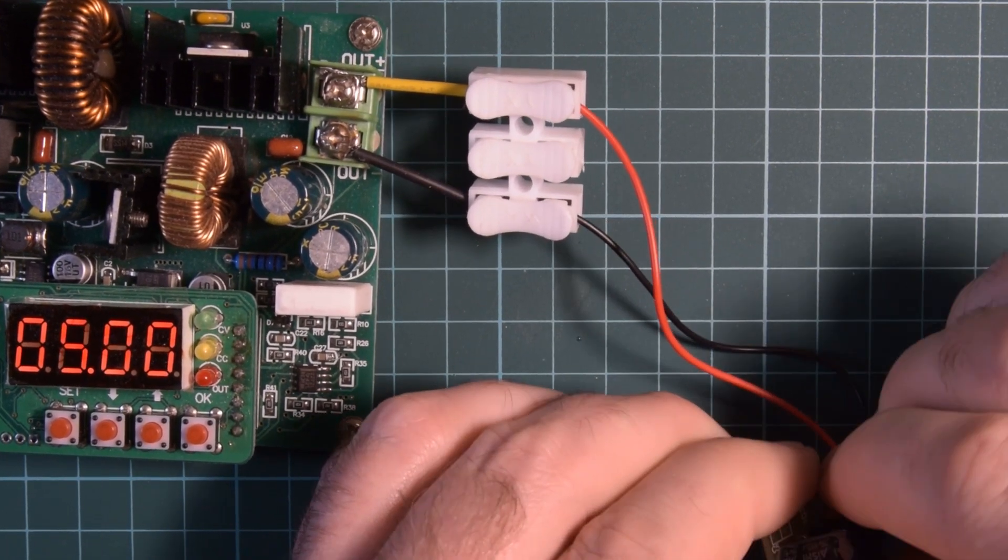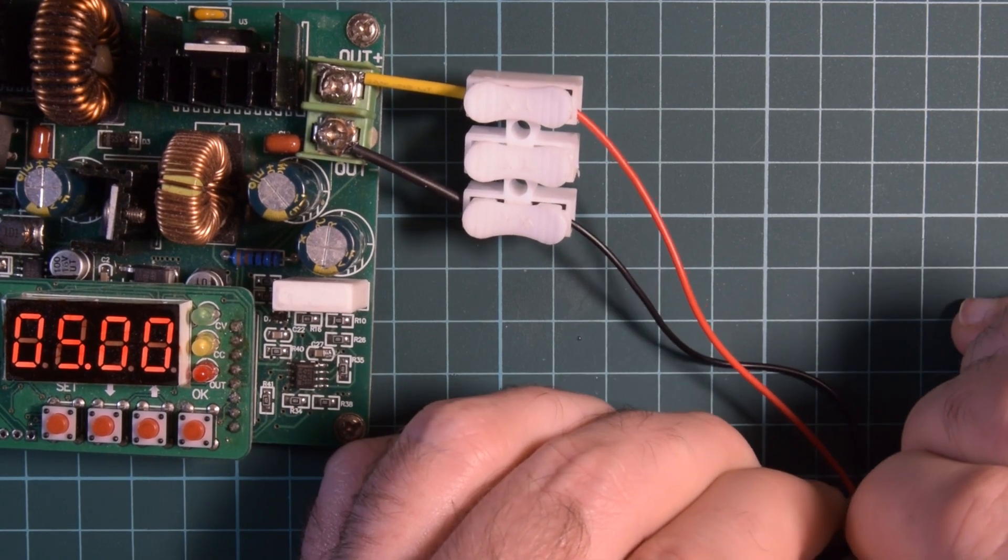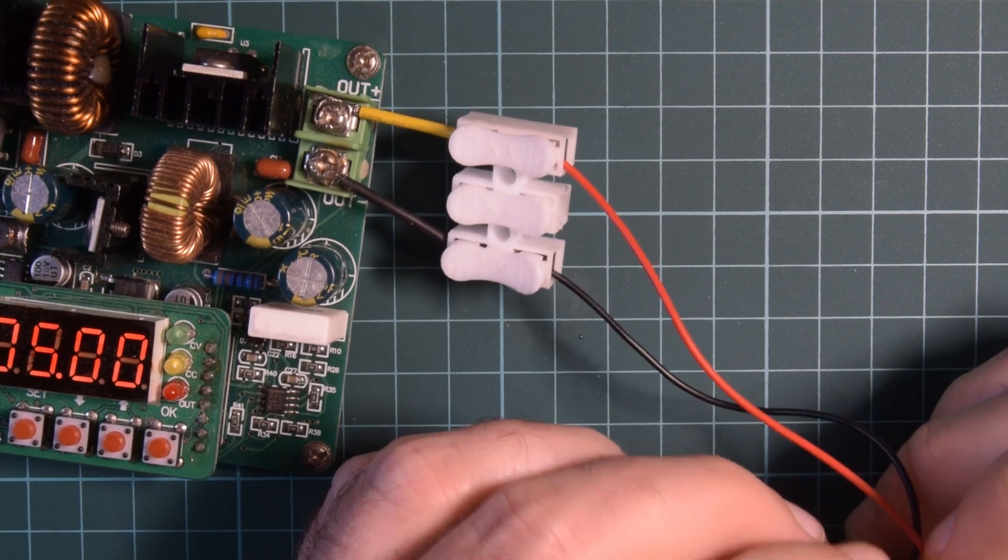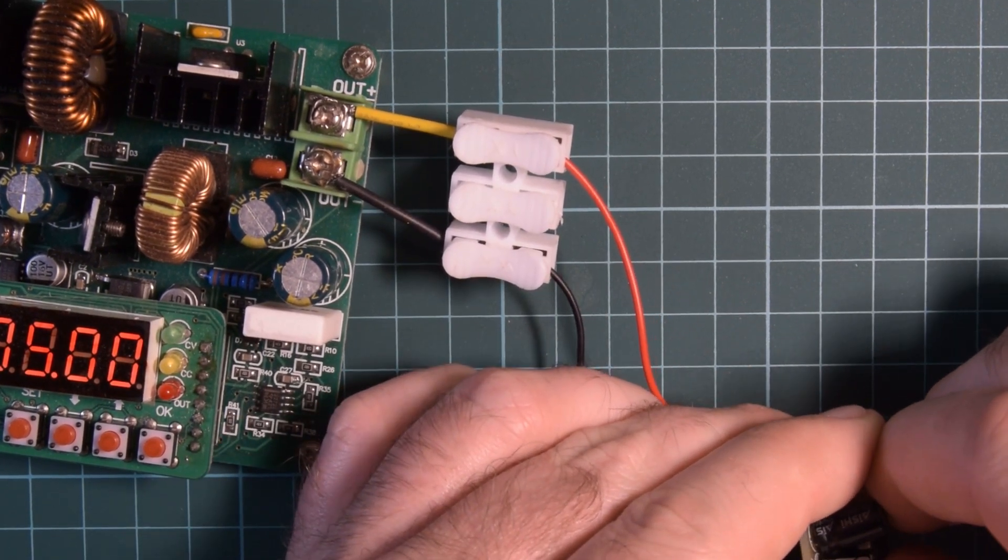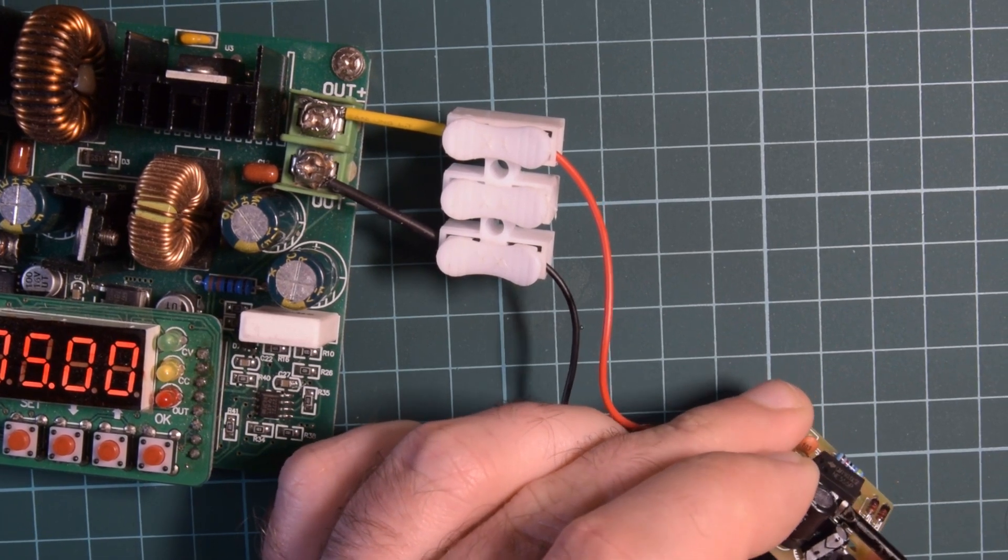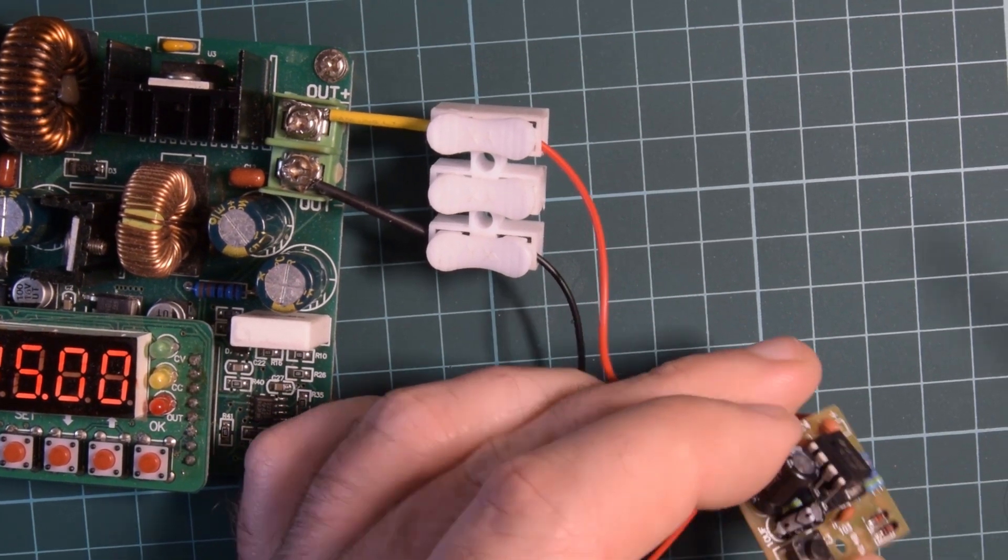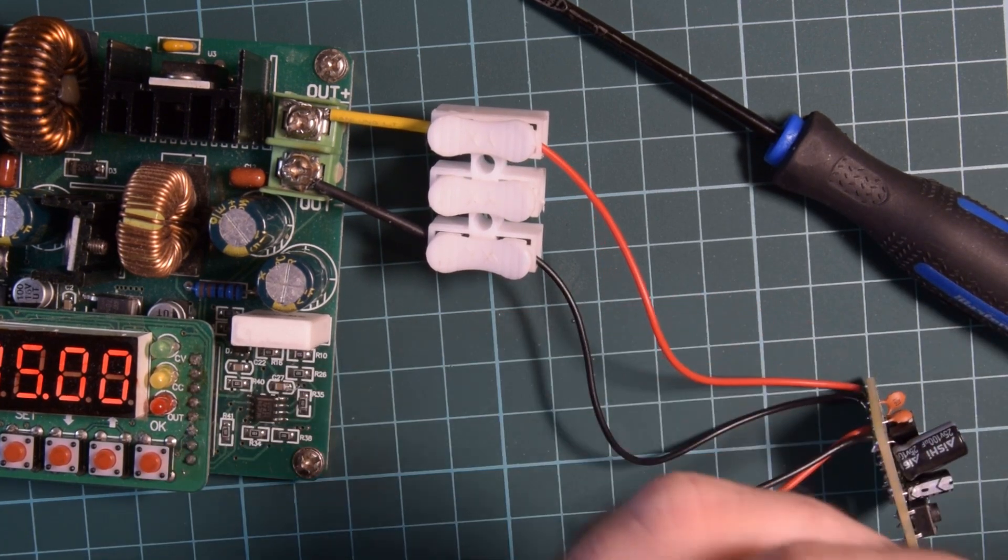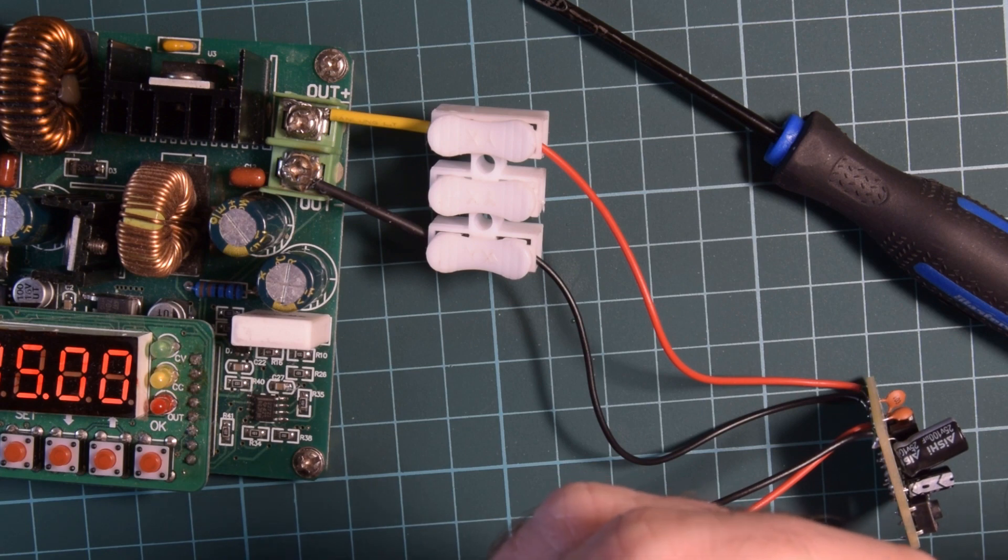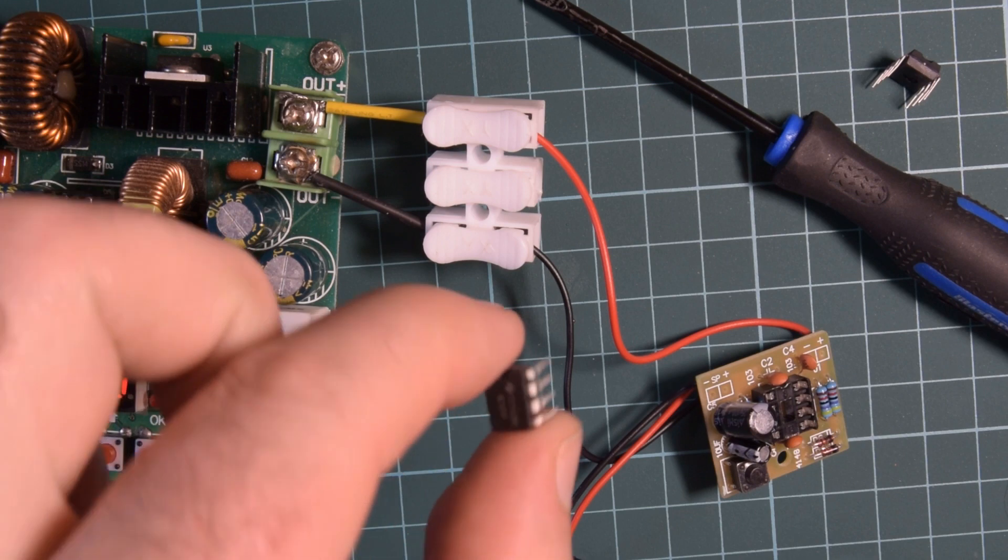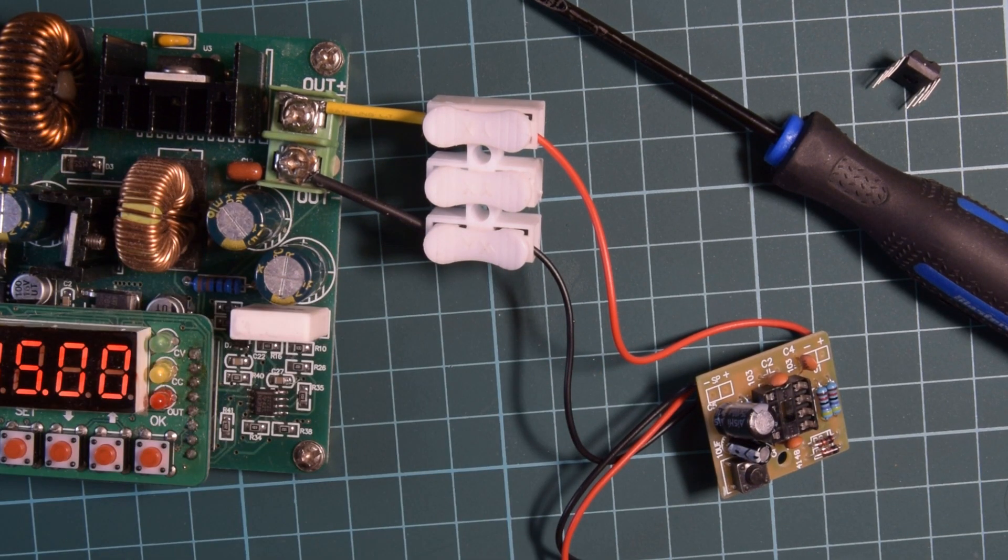What I can do though is tear this out and replace with a known good and see what that brings us. Nothing's bent. Let me go grab another one. Got here a fresh never before used 555 timer.